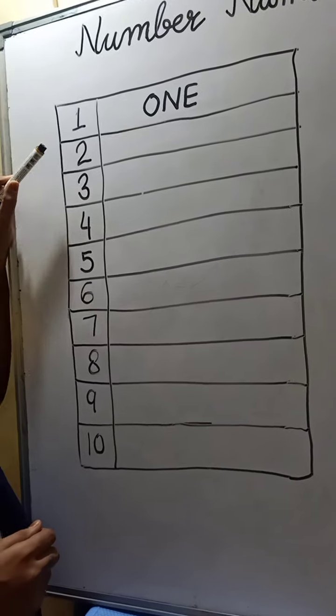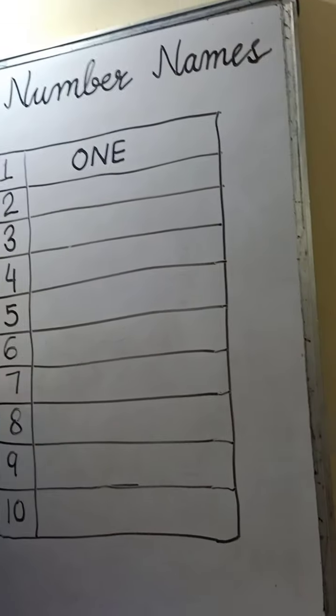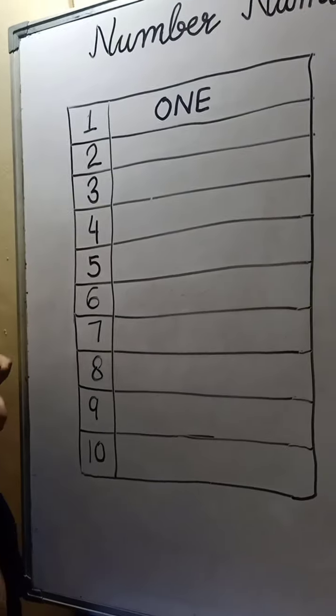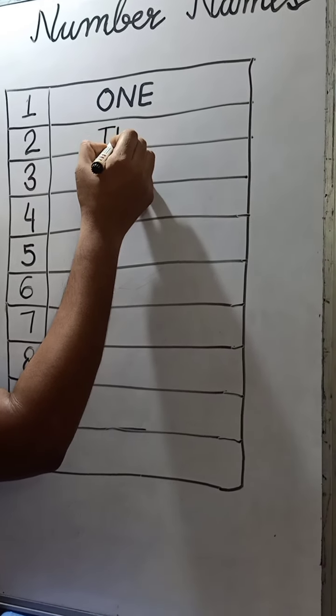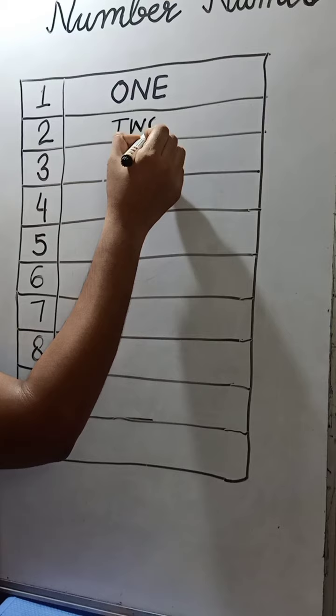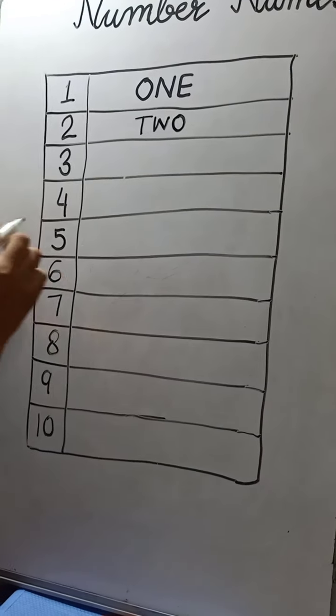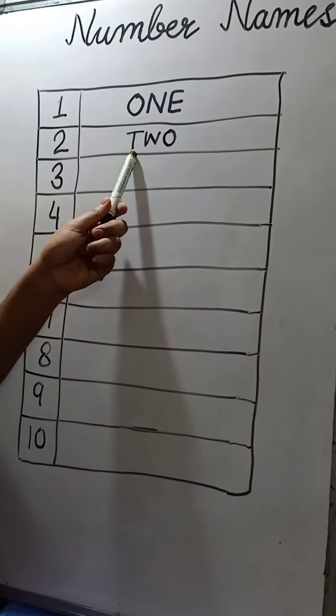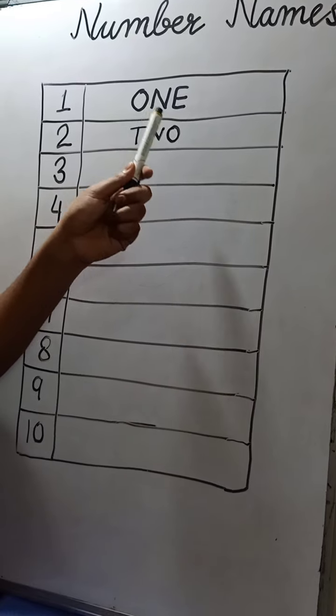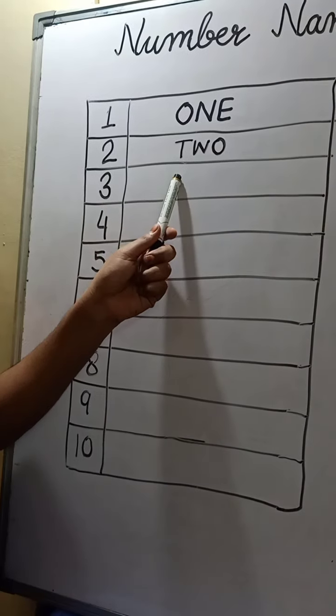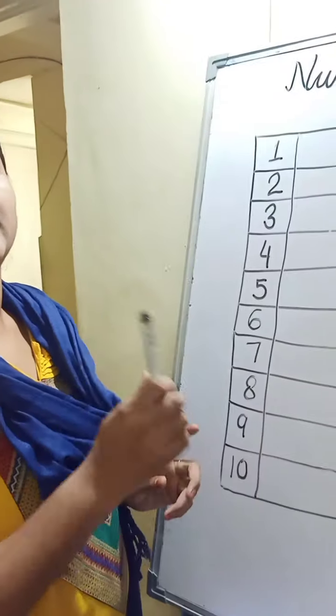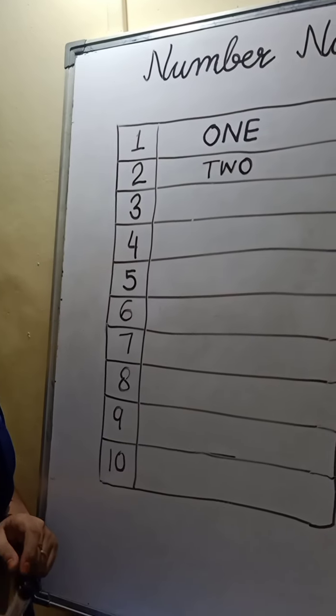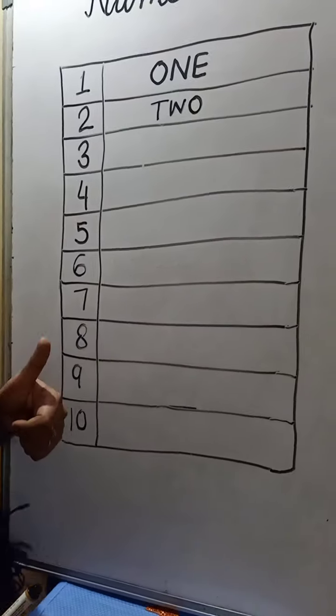Now this is number 2. T-W-O. Now speak with me. T-W-O. Again repeat once with me. T-W-O. Very good.